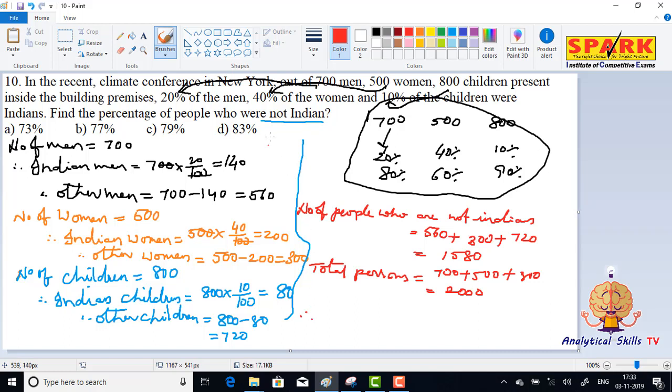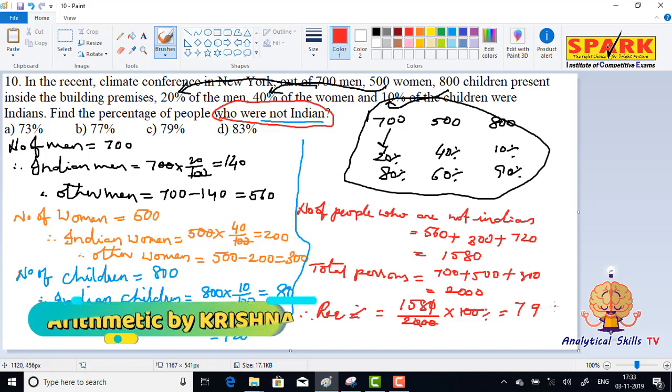Therefore, required percentage: how many are there who are not Indians? 1580. So required percentage is equal to 1580 by 2000 into 100 percent. After cancellation, 20 times 100 cancels, zeros cancel, 158 divided by 2 gives 79. So what is the answer? 79 percent is the answer.